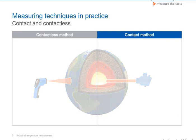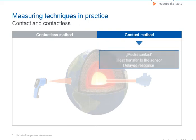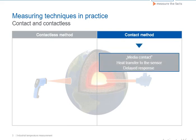Let's look now at contact temperature measurement. In the contact method, the sensor is brought into contact with the measuring medium, either directly or via a heat transfer medium. Before the sensor can display the correct medium temperature, it must first be brought by heat transfer to the temperature of the substance. This process takes time, which is why contact temperature measurement is always characterized by delayed response times.